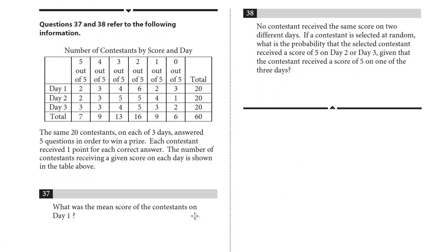What was the mean score of the contestants on day one? So we're only dealing with day one. This is a common question you see in tables to get the mean. We've got two contestants received a five. How do we get the total? It's two, the number of contestants, times that score.